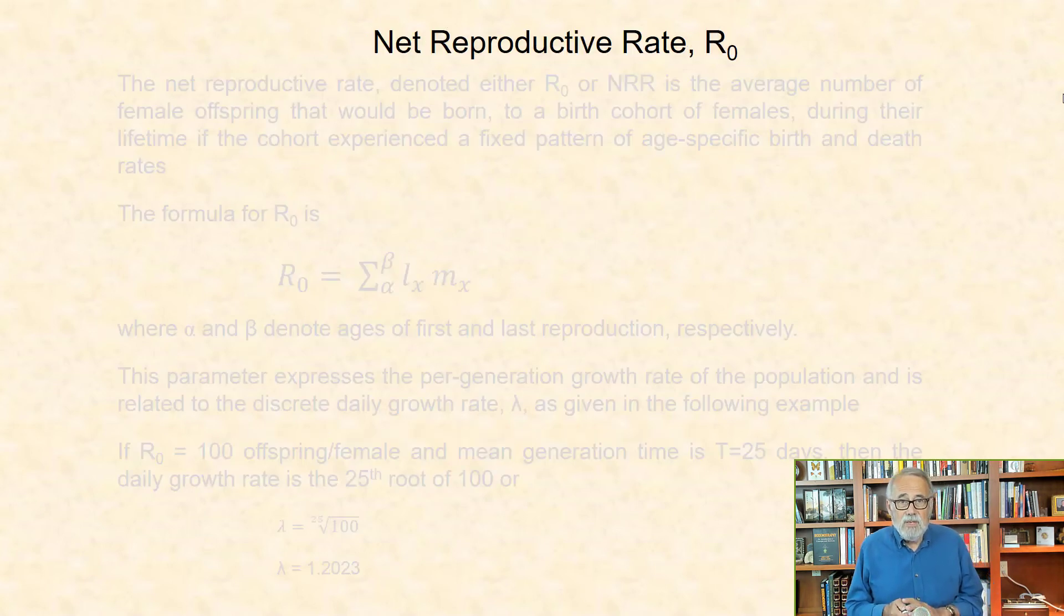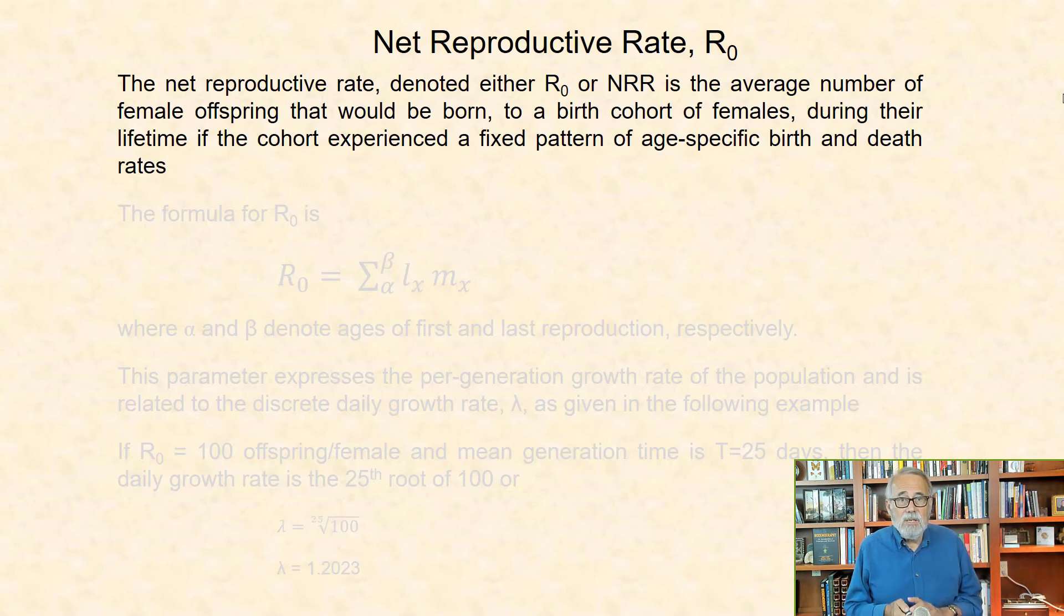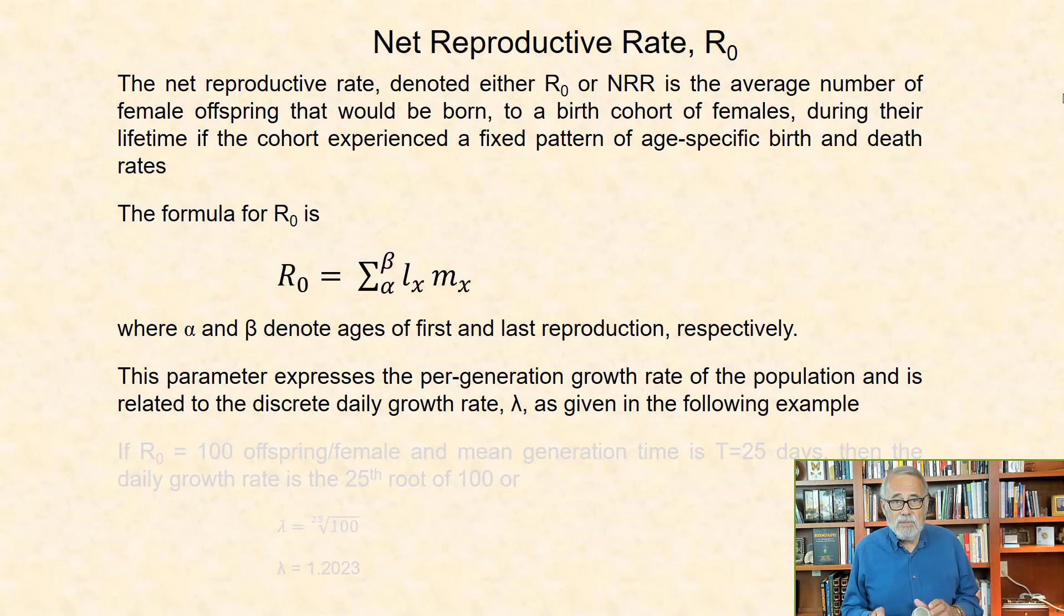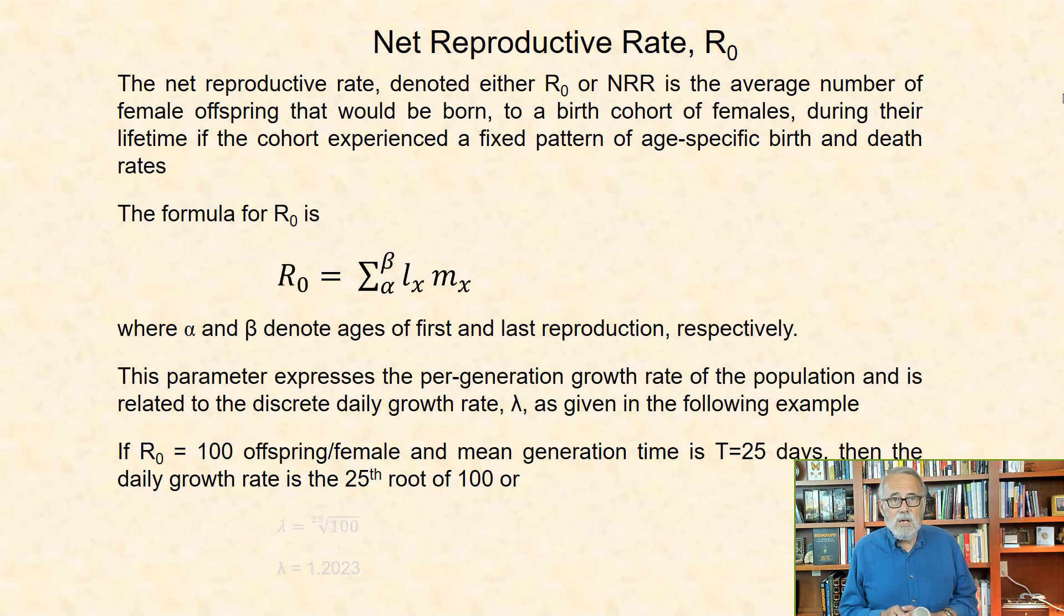Next, I cover net reproductive rate. This is denoted R0, or NRR, and is defined as the average number of female offspring that would be born to a birth cohort of females, during their lifetime if the cohort experienced a fixed pattern of age-specific birth and death rates. The formula for R0 is the sum of Lx*mx from the ages of first to last reproduction, alpha and beta. This parameter expresses the per-generation growth rate of the population, and is related to the discrete daily growth rate, lambda, as given in the following example. If R0 equals 100 offspring per female, and mean generation time is T equals 25 days, then the daily growth rate is the 25th root of 100, or lambda equals 1.2023.